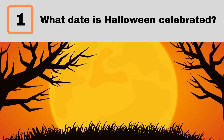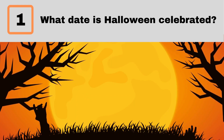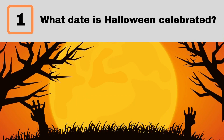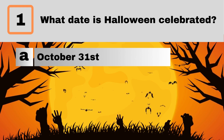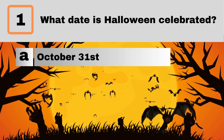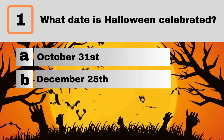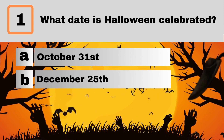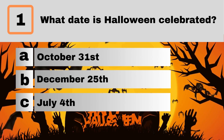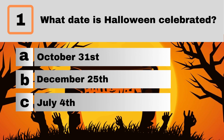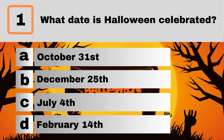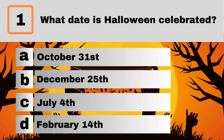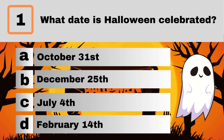Question 1. What date is Halloween celebrated? A. October 31st. B. December 25th. C. July 4th. D. February 14th.